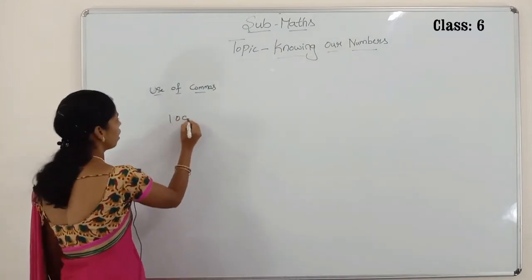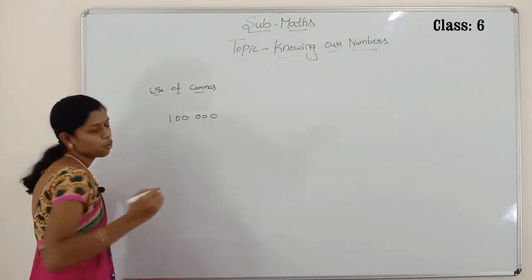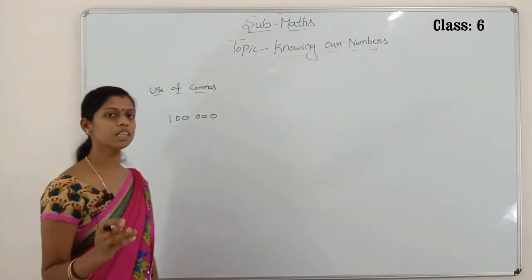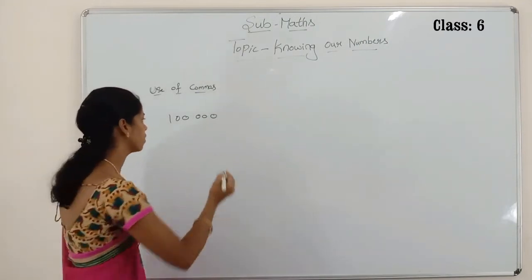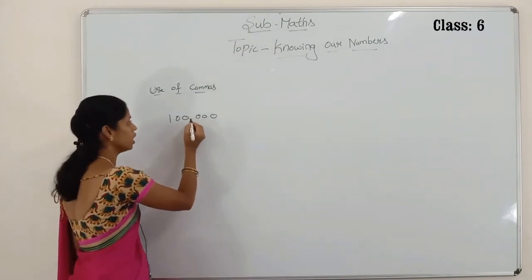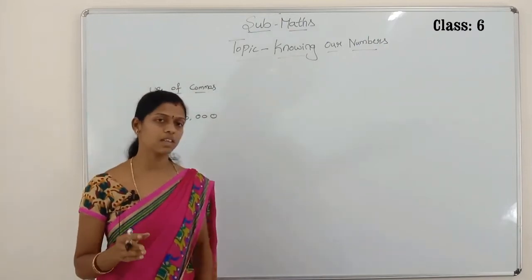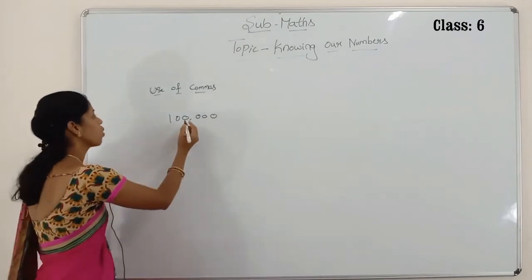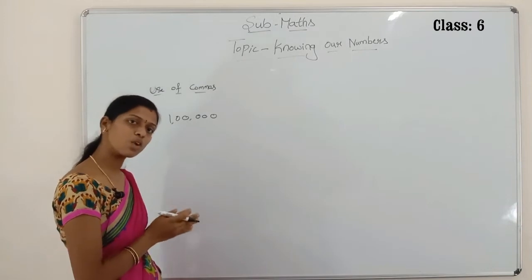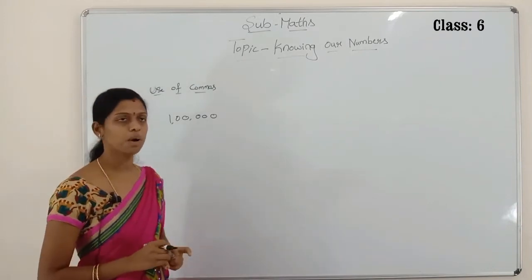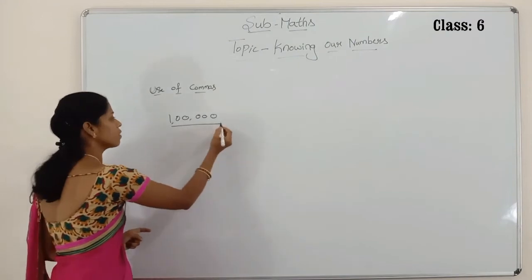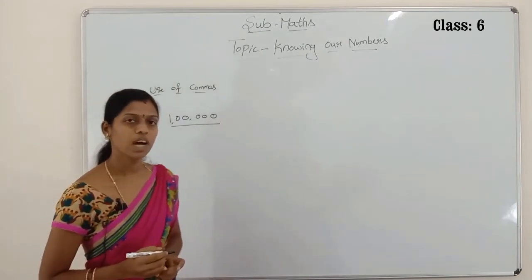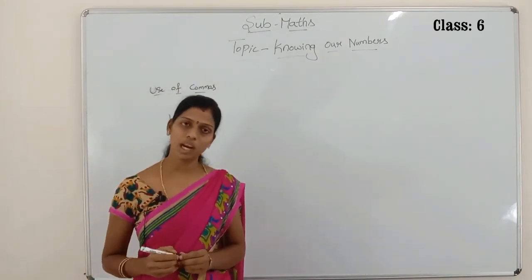Where do you put the comma? The first comma is always from the right side of the number — after the three-digit position, you put one comma. Then after every two digits, you put the next comma. We can read this as one lakh — see how many zeros there are: five zeros come in one lakh.